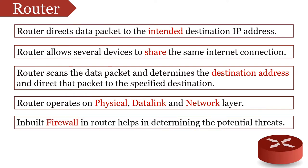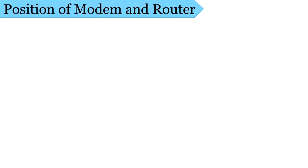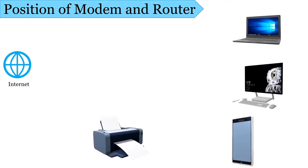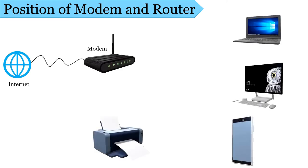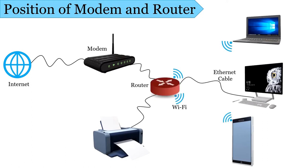The inbuilt firewall in the router helps in determining potential threats. If you try to figure out the position of modem and router in between your ISP, that is your internet service provider, and your systems, then the modem lies between your ISP and the router, and the router lies between the modem and several devices connected to the same internet connection.